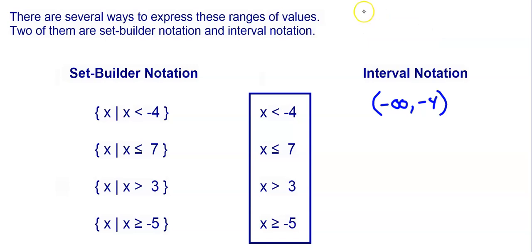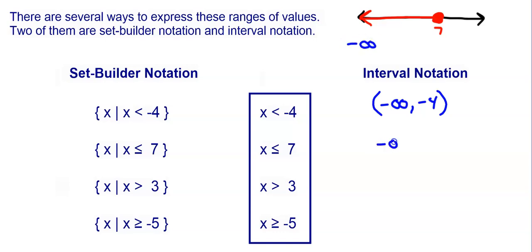For x is less than or equal to 7, draw a picture if you need to. Everything smaller than 7 with a closed circle because it's equal to. Going to the left means going to negative infinity. So the smallest number is negative infinity and the largest is 7. Infinity gets a parenthesis, and because it's a closed circle — equal to 7 — we put a bracket: (−∞, 7].